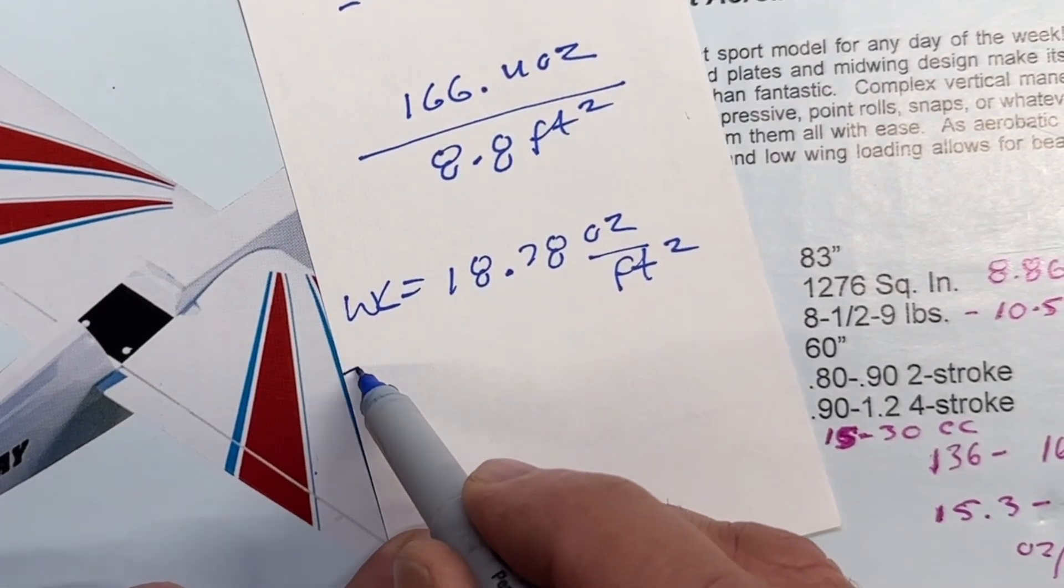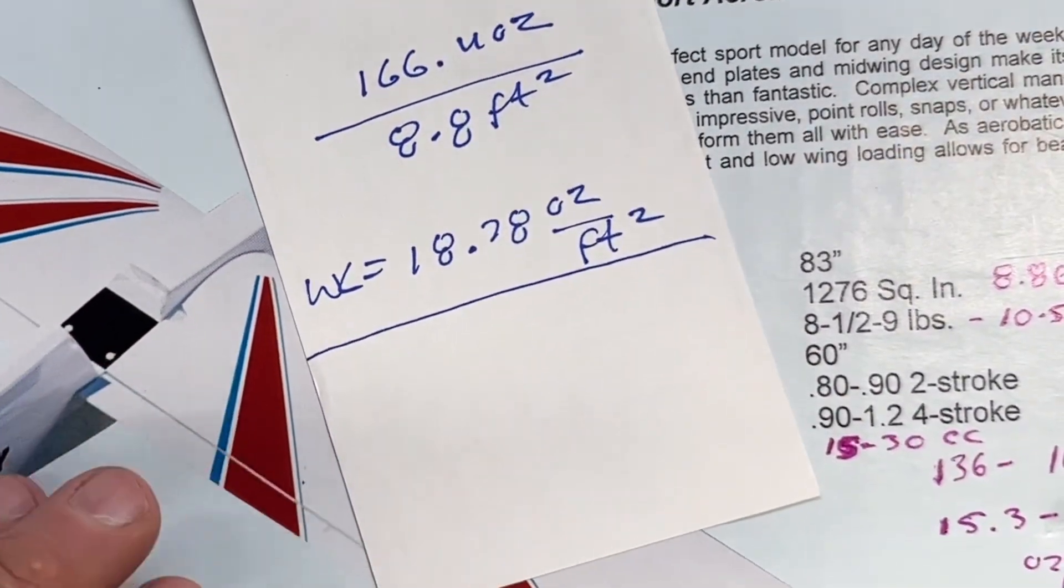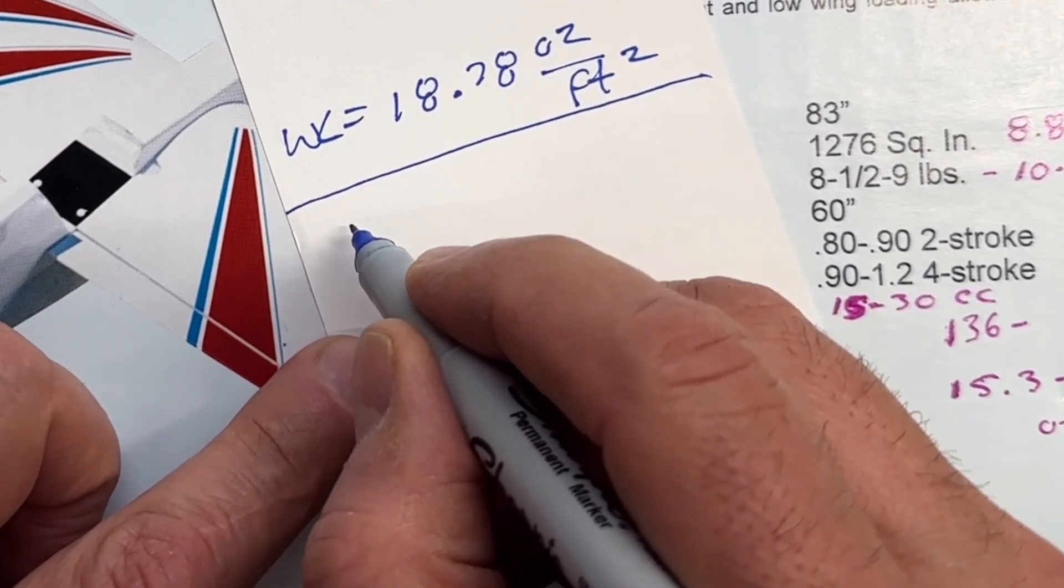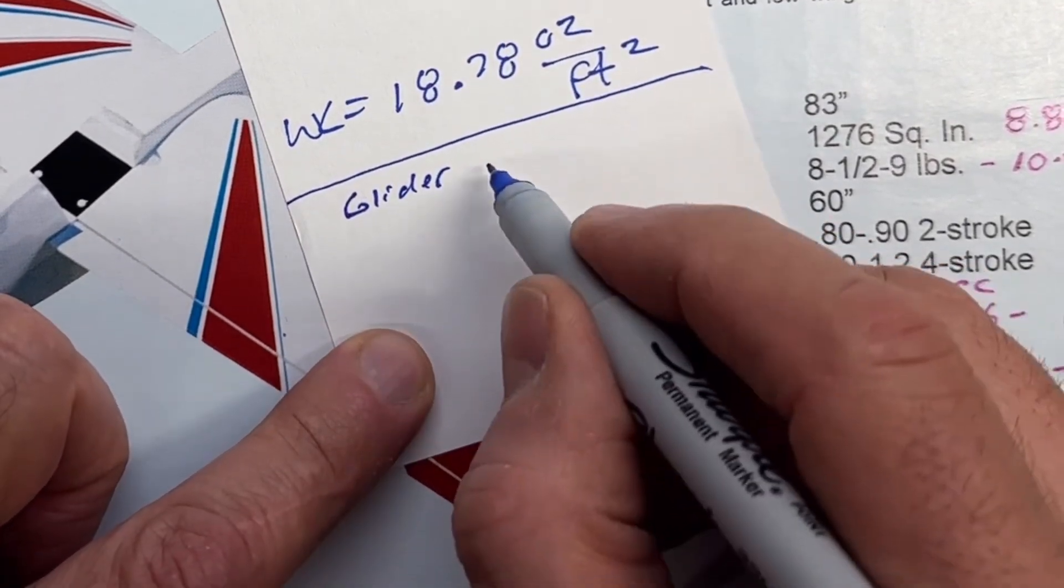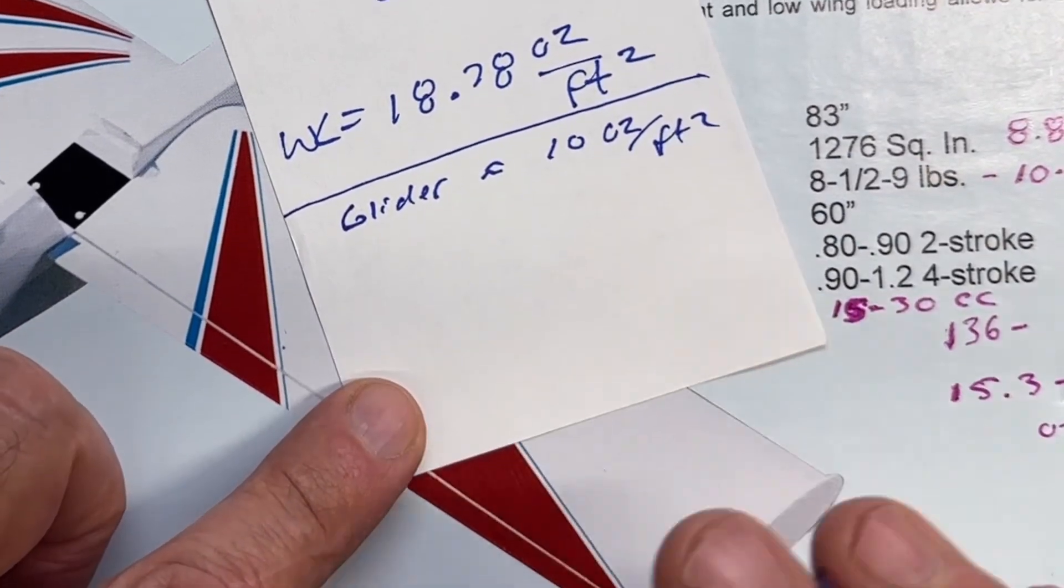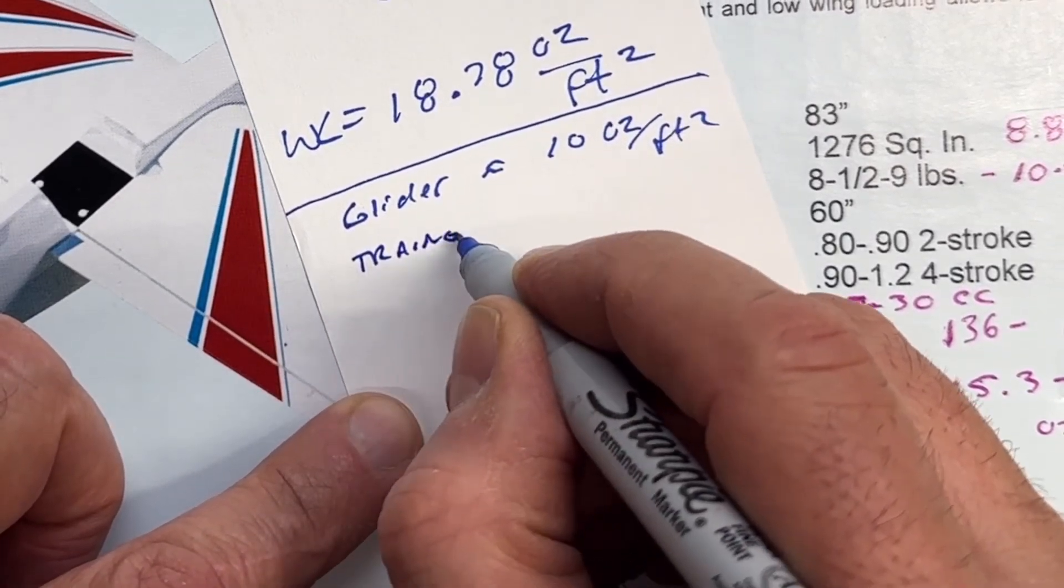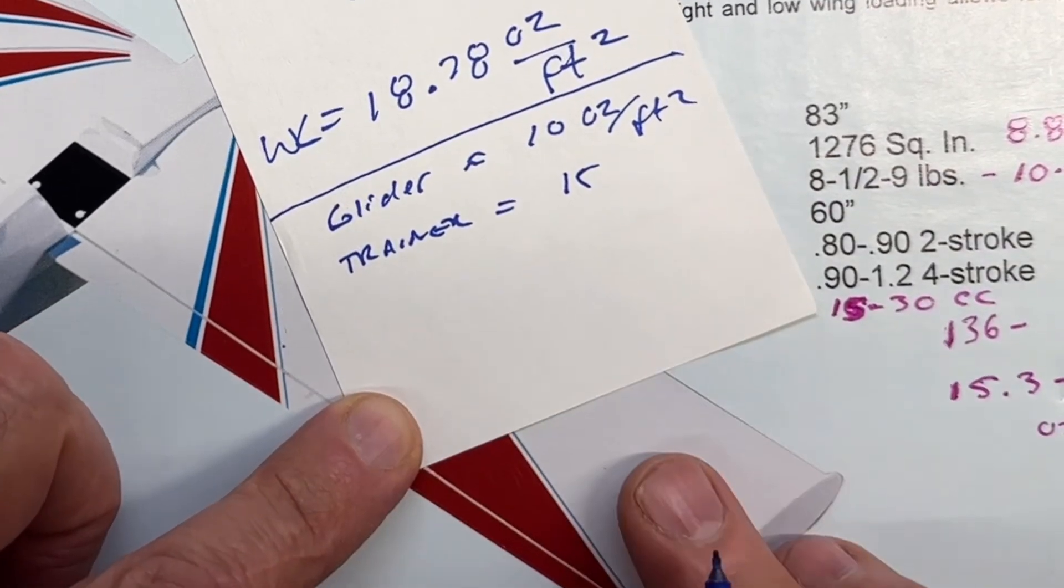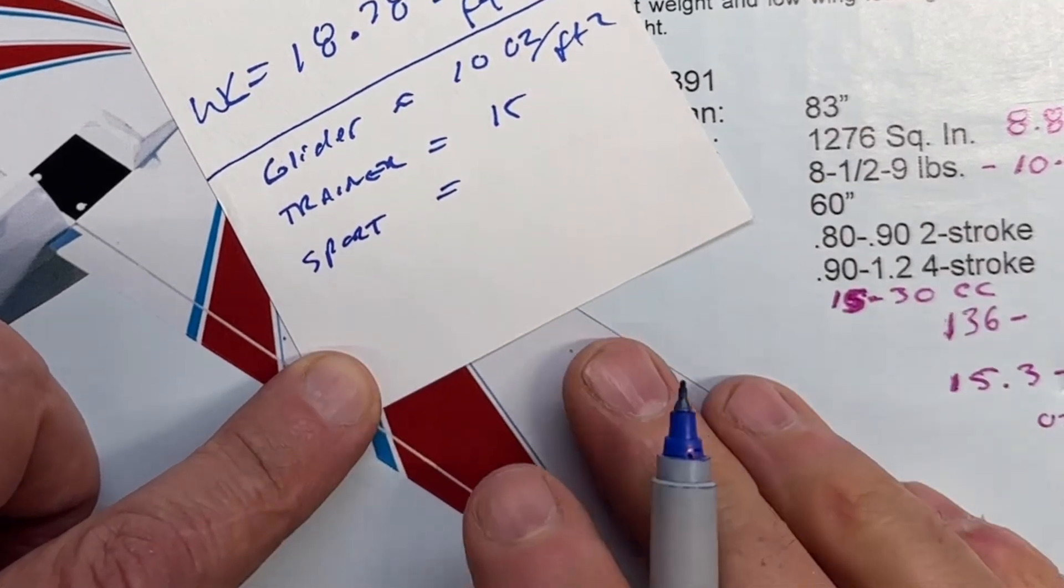So let's talk about wing loading real quick. I'm kind of running out of room, but some general numbers for wing loading. I have them written down here. So for basically like a glider or a sailplane, glider is about 10 ounces per foot squared. Again, these are rough numbers. And then for a trainer, it's about 15 ounces per foot squared.